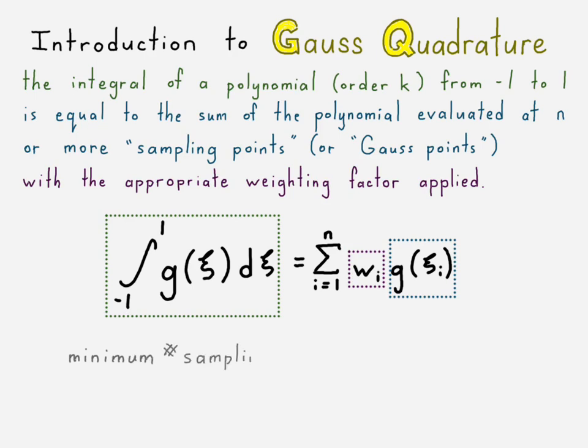All right. So the one criteria is that the minimum number of sampling points, N, is equal to the order of the polynomial k plus 1 divided by 2. So that's the number that are necessary for actually a complete representation, completely accurate, where we can say this is an equal sign.